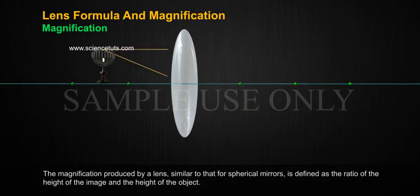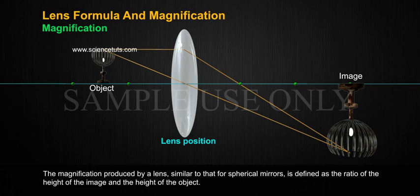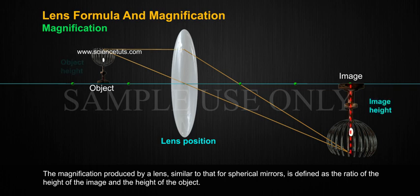Magnification. The magnification produced by a lens, similar to that for spherical mirrors, is defined as a ratio of the height of the image and the height of the object.